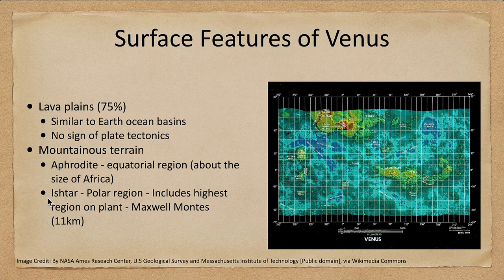So what do we know about Venus? Well, first of all, it's very hard to see. It is completely shrouded in clouds, so we do not see the surface from Earth and cannot see the surface in visible light. However, we can study it by radar. Here we have a radar map of Venus showing that it looks very similar to Earth.